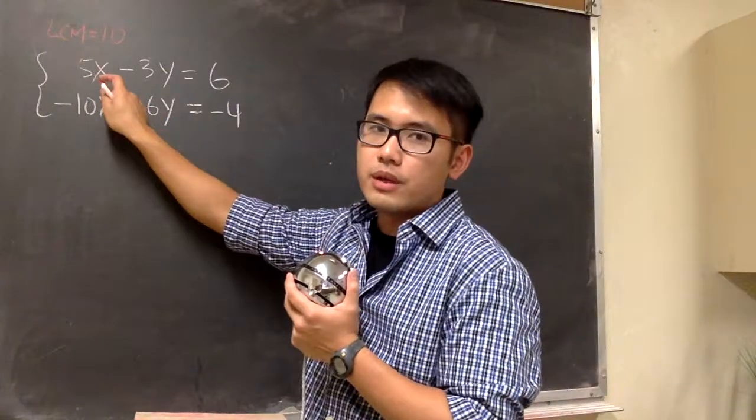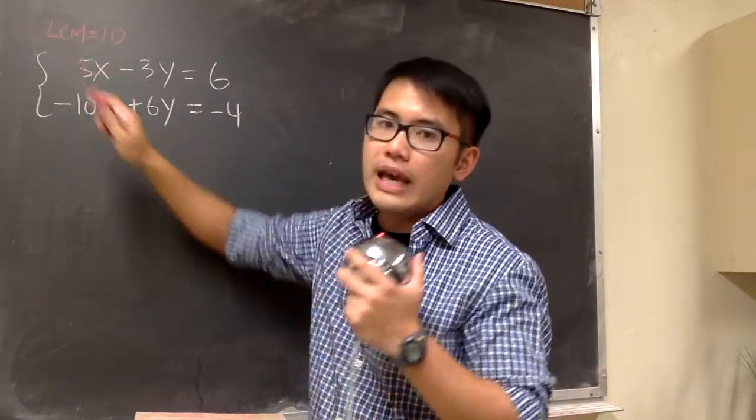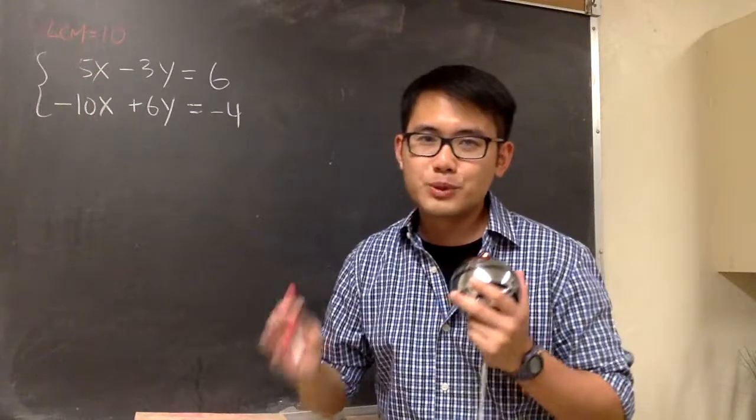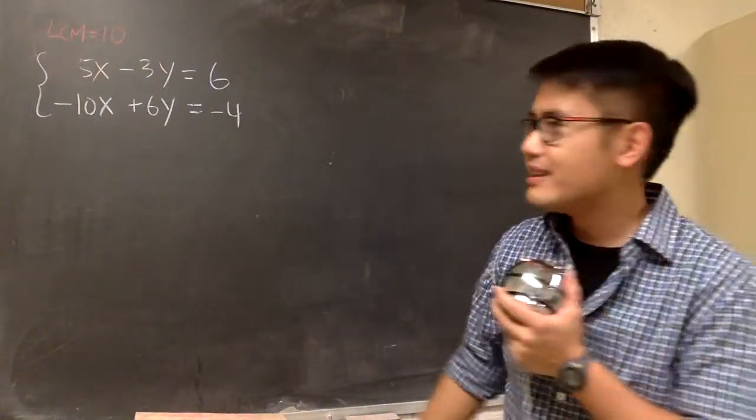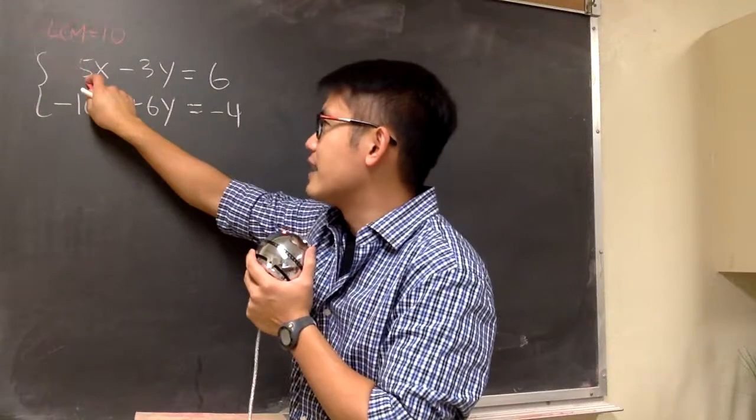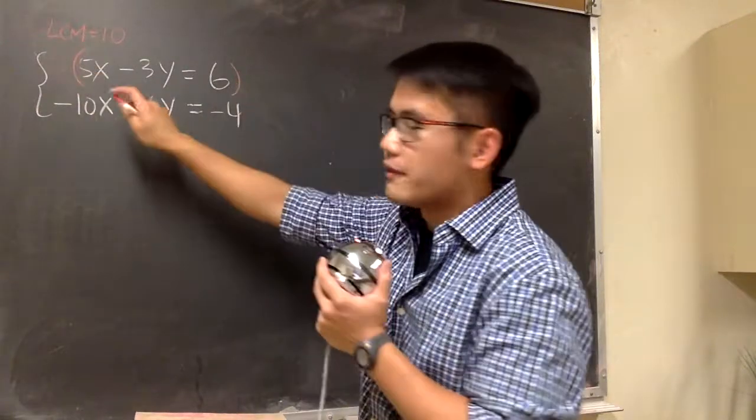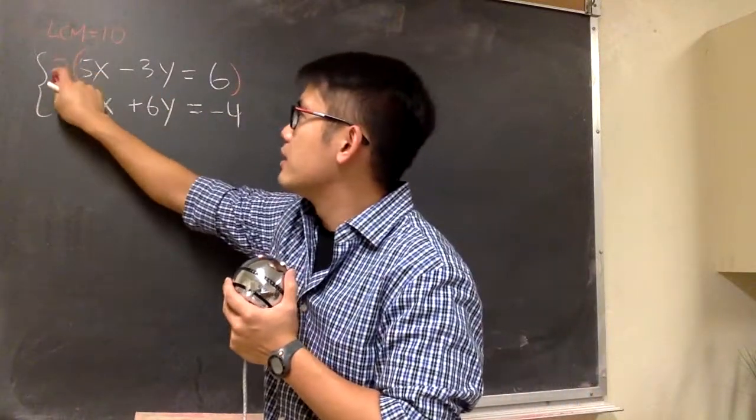Let's focus on the first one right here. We have a 5 right here already, and we have to ask ourselves, 5 times what will give us 10? We know 5 times 2 will give us 10, therefore I'm going to multiply the first equation by 2.